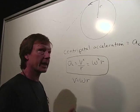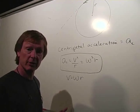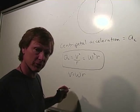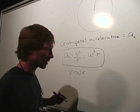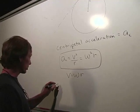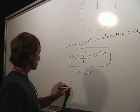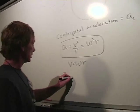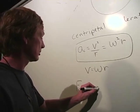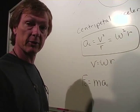Now, centripetal force, like any force, force is mass times acceleration. So centripetal force is mass times centripetal acceleration. So I'll call centripetal force F_c equals mass times centripetal acceleration.